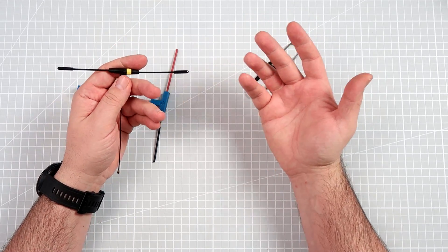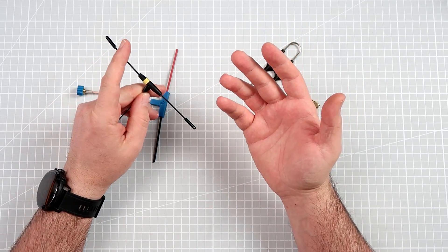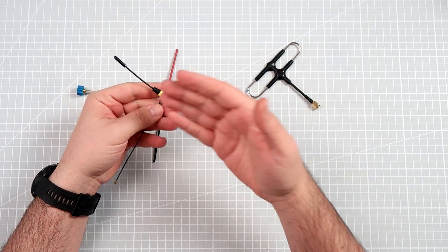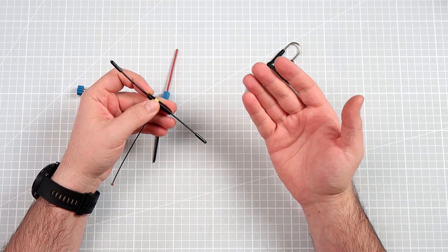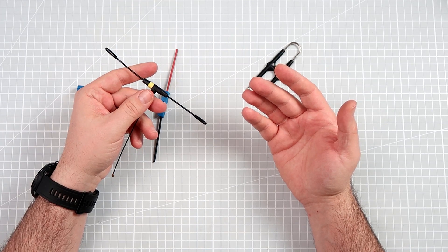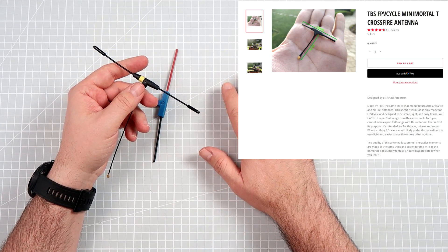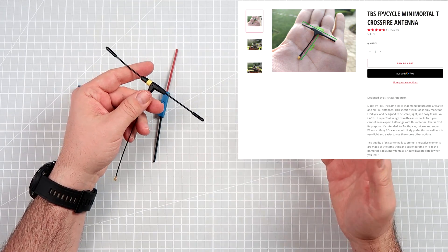From time to time, different people are trying to come up with a solution to the problem. Like for example, right now we can buy something that's called the FPV Cycle Mini Mortality Antenna.